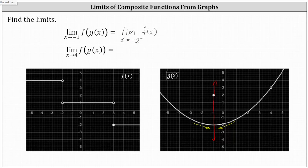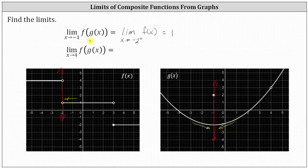We're approaching x equals negative two, this vertical line here, but only from the positive side or right side, which indicates we're approaching from this side here. We're approaching the y value or function value of positive one. This indicates the one-sided limit is equal to positive one, and so is the limit as x approaches negative one of f of g of x.